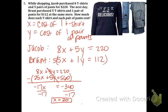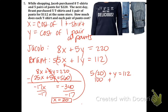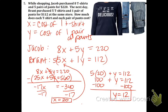Now to find the price of a pair of pants. The bottom equation has smaller numbers, so we might as well use that one. So this 20 goes right there: 5 times 20 plus y equals 112. 5 times 20 is 100. Subtract 100 from both sides and you get 12. So a pair of pants is on sale for $12 and the shirt was $20.